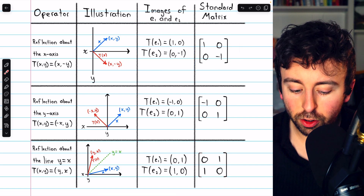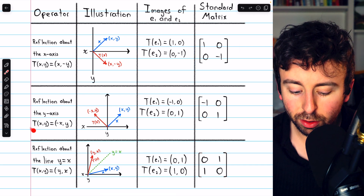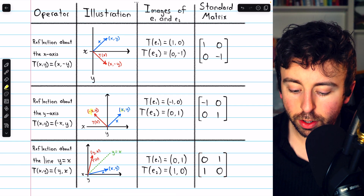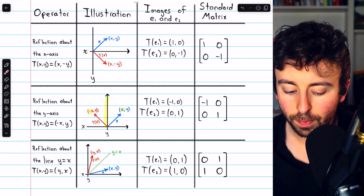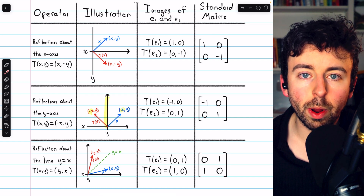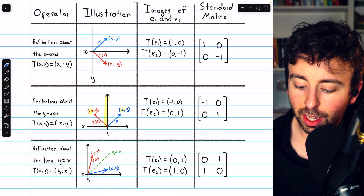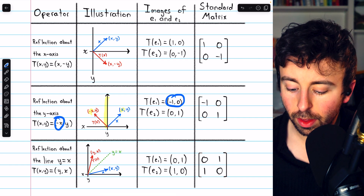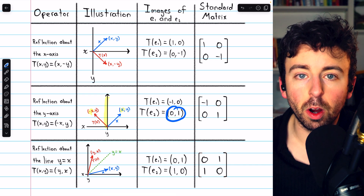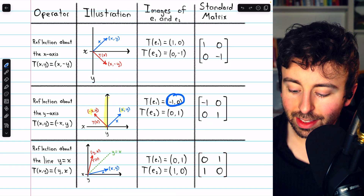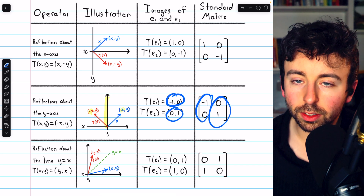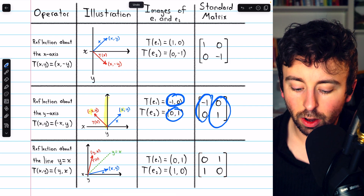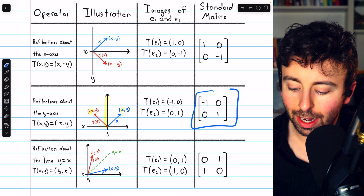Things are similar for reflection about the y-axis. This transformation will negate the x-coordinate. We can see in the picture that negating the x-coordinate produces a reflection across the y-axis. If we take the standard basis vectors from R-squared and plug them in, plugging in (1, 0) produces (-1, 0) — it negates the x-coordinate — and the image of (0, 1) is just (0, 1), unchanged. We use these images to build the standard matrix for the transformation.